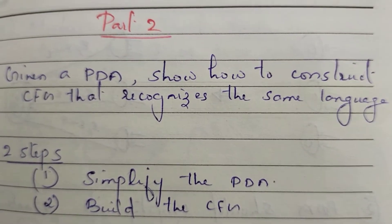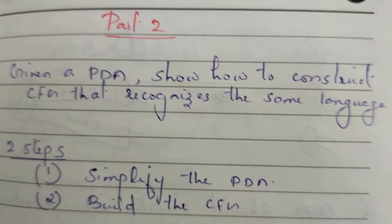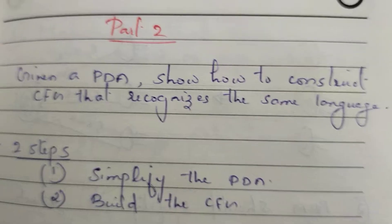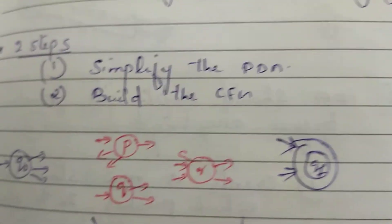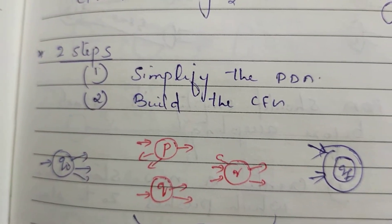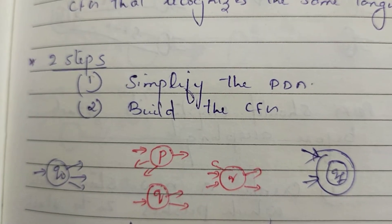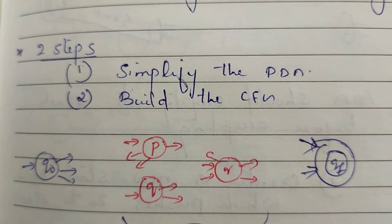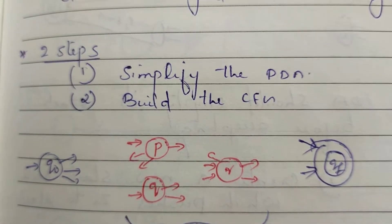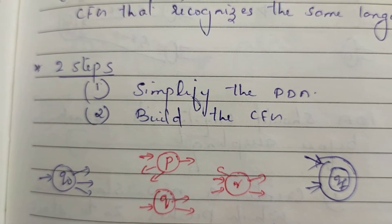In the first part, we are going to simplify the PDA. Let's look at the states Q0 and QF. This is a state called PQR. Q0 is the starting state, QF is the accepting state. This is the final state. This is the intermediate state called PQR.